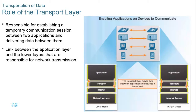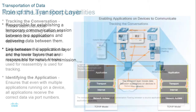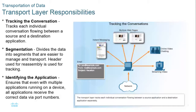In the graphic on the right, the transport layer accepts data from the application layer and prepares it for the network by adding a transport layer header with port numbers. It then passes it down to the internet layer, which puts it in a network packet, and then down to the network access layer — like an Ethernet adapter — which puts it in an Ethernet frame and sends the bits out over the wire. The transport layer tracks individual conversations and keeps them separate.